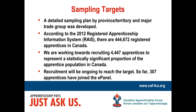We have developed a sampling plan by province and territory and major trade group. According to the 2012 Registered Apprenticeship Information System run by Stats Canada, there are approximately 400,000 registered apprentices in Canada. We are working towards recruiting around 4,000 apprentices to ensure that the panel represents a statistically significant proportion of the apprentice population in Canada. Recruitment will be ongoing to reach our provincial and territorial targets and our targets for each of the major trade groups. So far we have 300 apprentices who have joined the ePanel and recruitment will be ongoing to reach our targets.